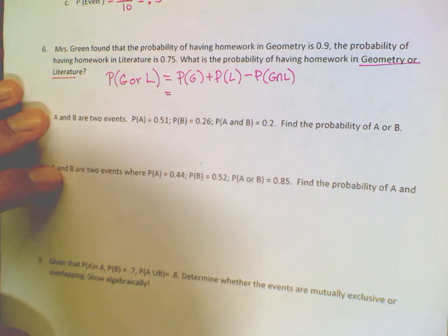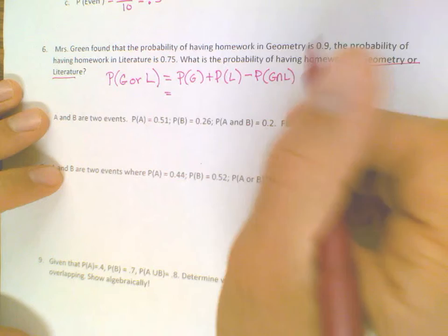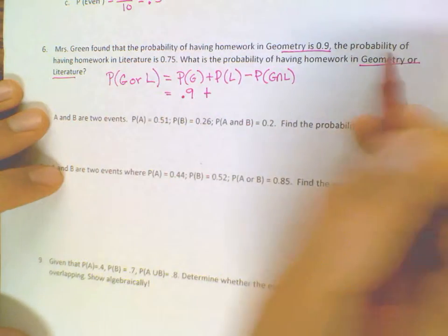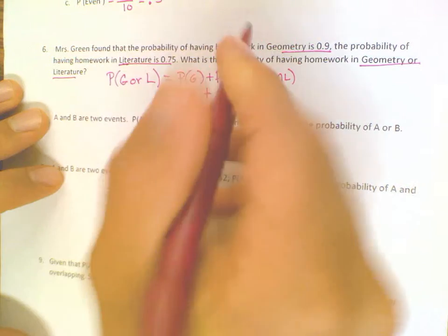So what is the probability of having homework in geometry? Point nine. And literature? Point 75.